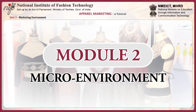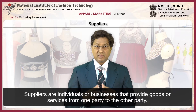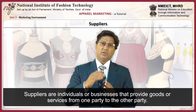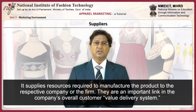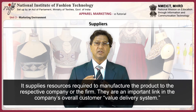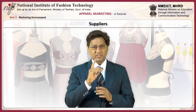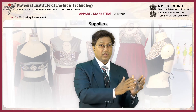This module focuses on the forces that can be controlled by the company — its micro environment. The micro-level occurrences can affect any firm's ability to serve or respond to its customers, suppliers, intermediaries, selling markets, and competitors. Suppliers are individuals or businesses that provide goods or services from one party to another, supplying resources required to manufacture the product. They are an important link in the company's overall customer value delivery system.